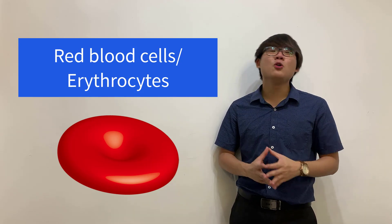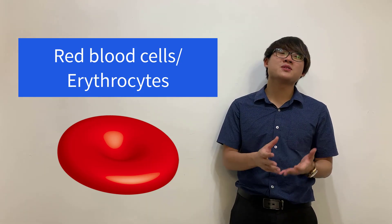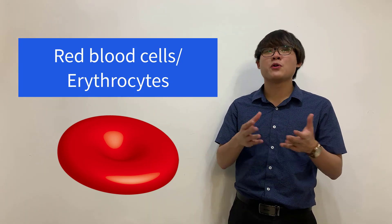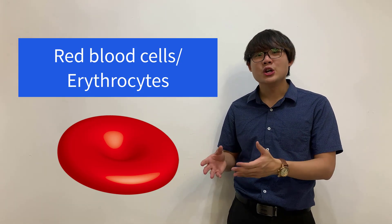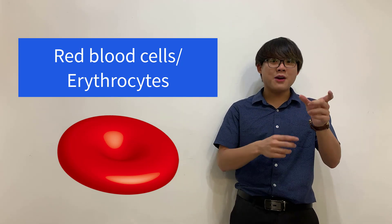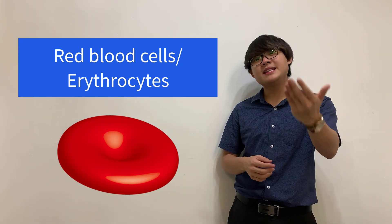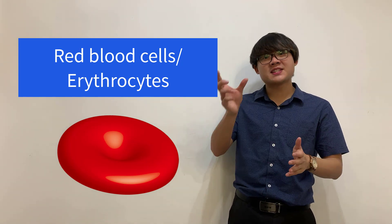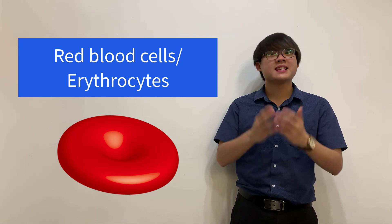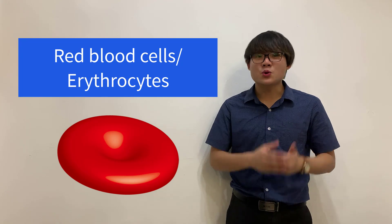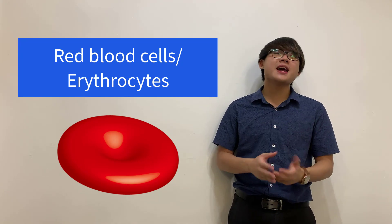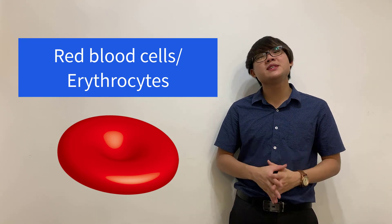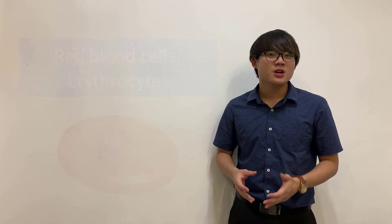So at a high level, we call red blood cells as erythrocytes. 'Ery' means red, 'cyte' means cell. So erythrocyte, in other words, means red blood cell.